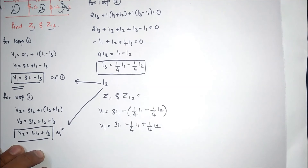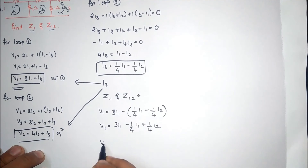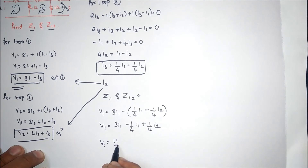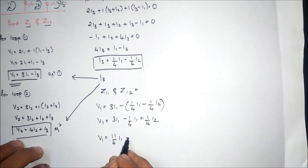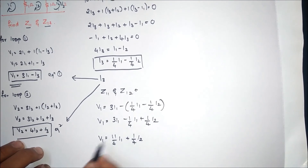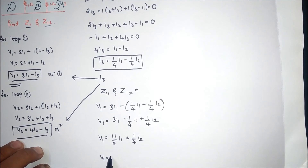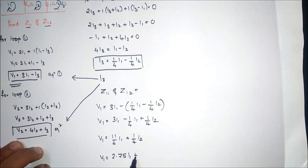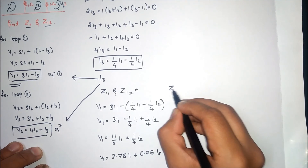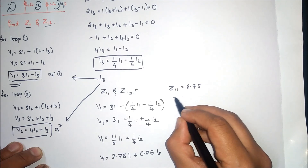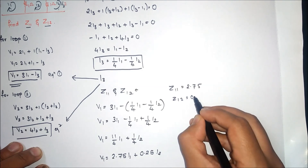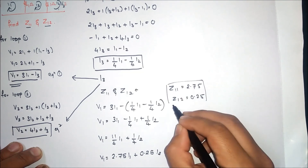Our answer is v1 equals 2.75i1 plus 0.25i2. Therefore, Z11 equals 2.75 and Z12 equals 0.25.